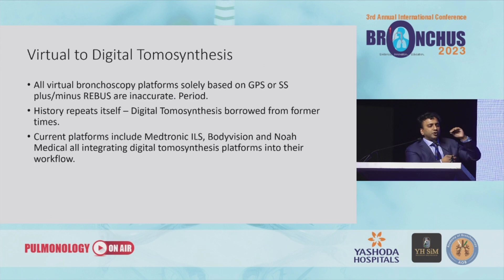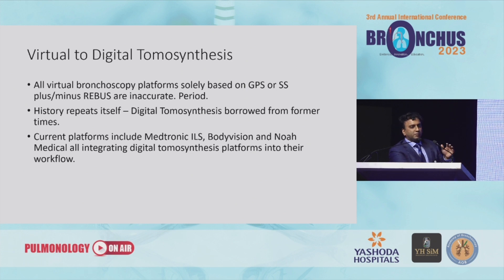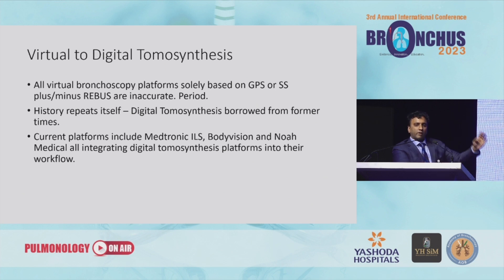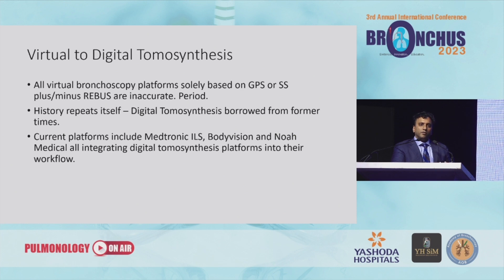Digital tomosynthesis has limitations, especially with atelectasis and excessive chest wall growth. But the main takeaway is that when we moved from virtual bronchoscopy to digital tomosynthesis, we're starting to correct for that CT to body divergence. And anybody who tells you that shape sensing has minimal or no CT to body divergence is wrong.